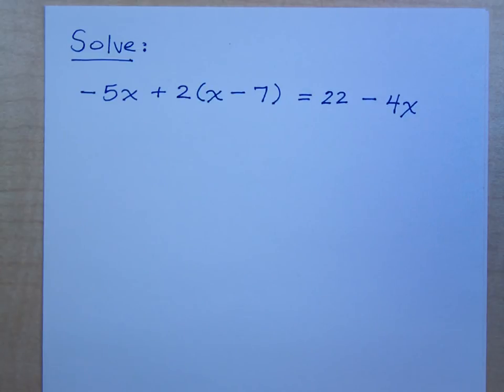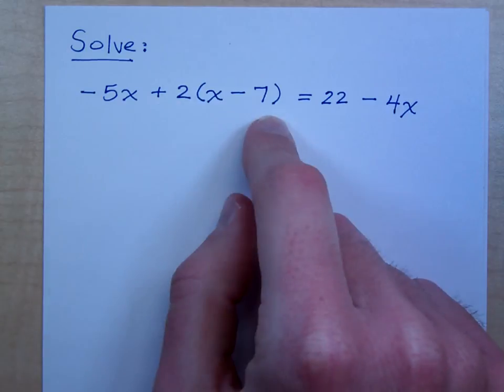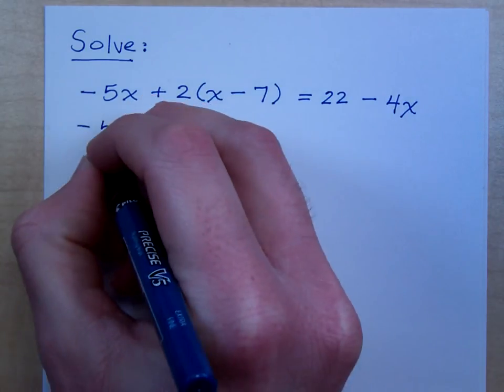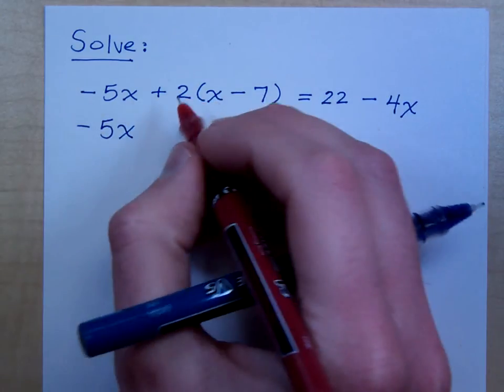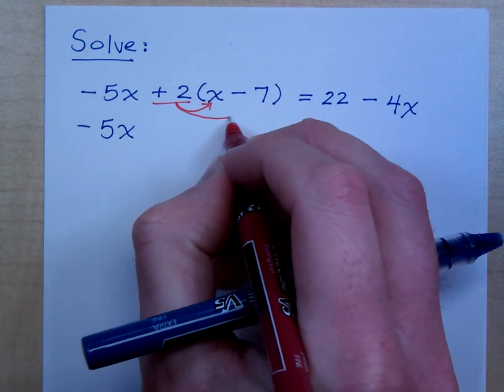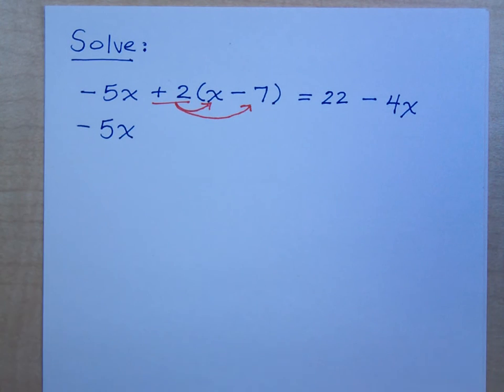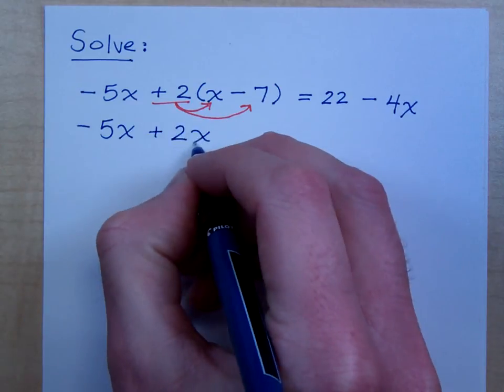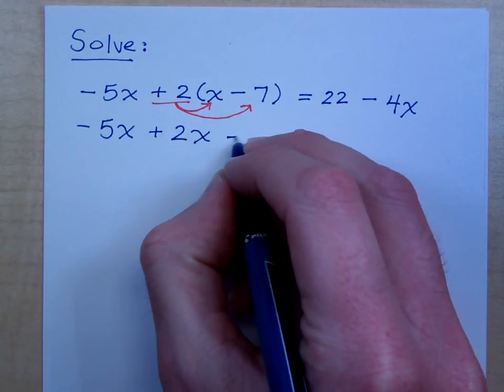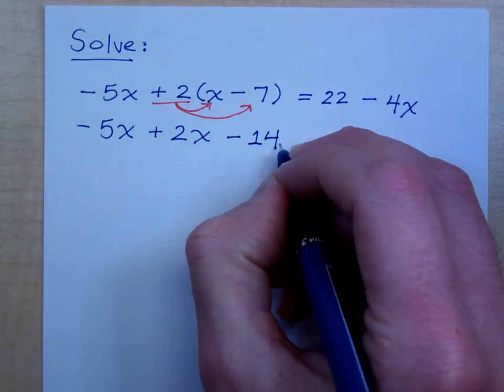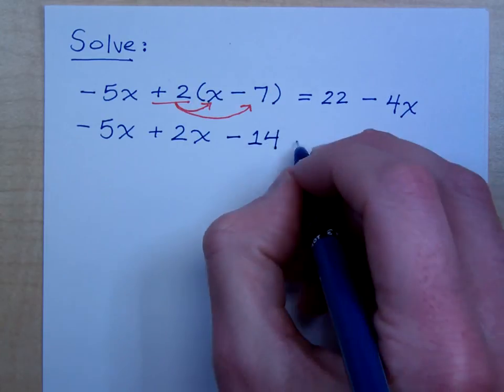The first thing I see is that I've got this 2 that needs to be distributed. Everything else is just going to get brought down. So, this is negative 5x, but when I distribute here, this is distributing a positive 2 to x and to negative 7. So, what's 2 times x? 2x. That's 2x, and then 2 times negative 7 is minus 14. You always have to pay attention to your signs.